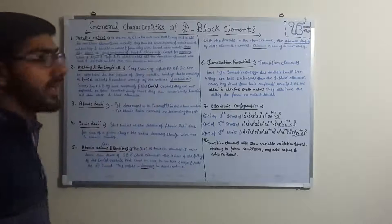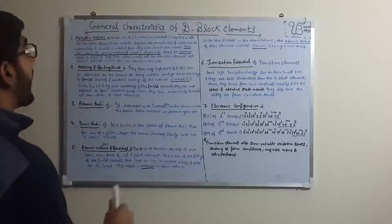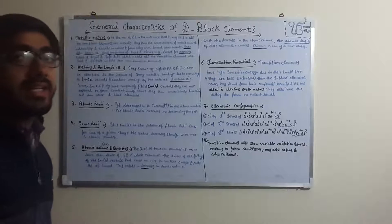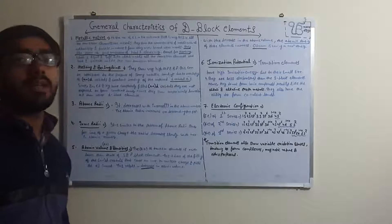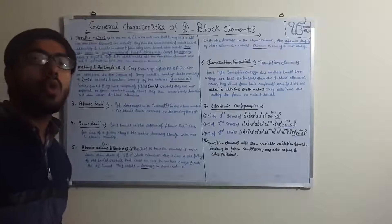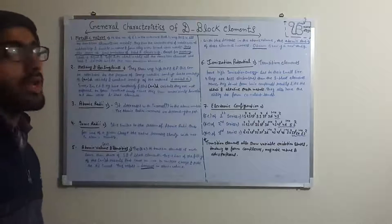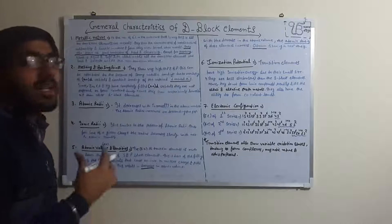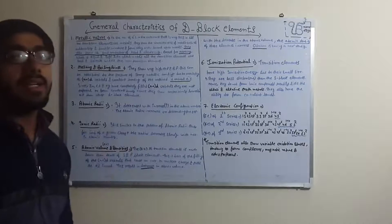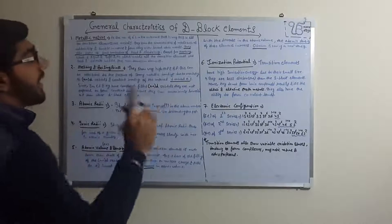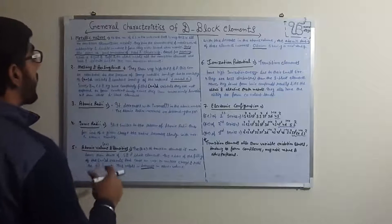Now we move on to the second point: melting and boiling points. Transition elements show very high melting points and boiling points. This can be attributed to the presence of strong metallic bonding due to overlapping of N minus 1 D orbitals. High melting and boiling points occur because of this strong metallic bonding.